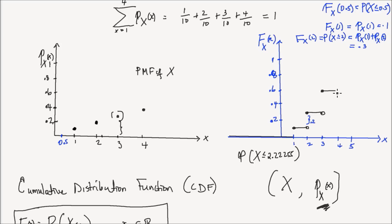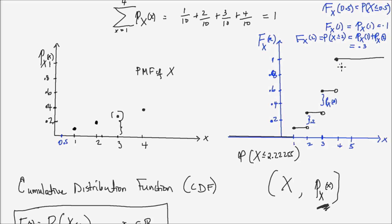It stays constant until a probability mass is encountered again. At 4, I have a probability mass of 0.4, so this jumps again by 0.4 to get to 1. And it stays the same all the way to infinity. So I have a step function where the jump at each point is equal to the probability mass function at that point. The jump at 3 is the PMF at x equals 3, and the jump at 4 is equal to the PMF at x equals 4.